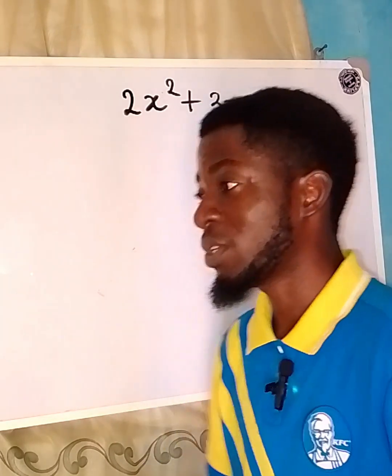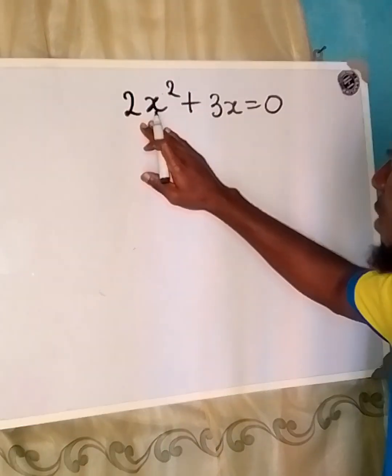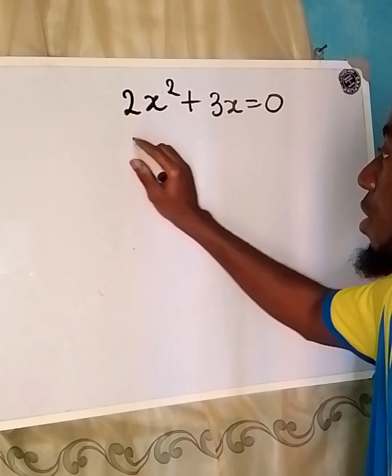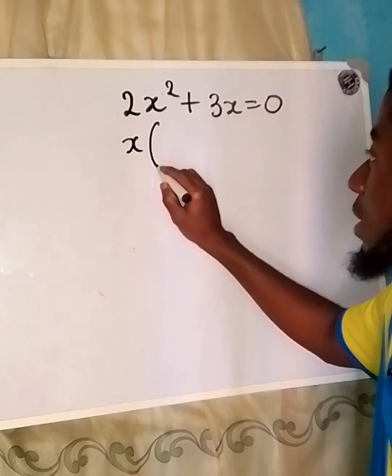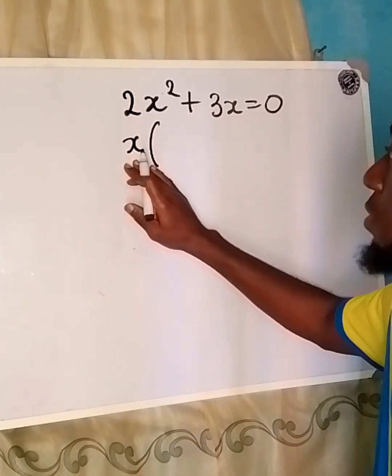Now this is how you do it. We can factorize what we have here because x is common, right? So it will come out as a common factor.